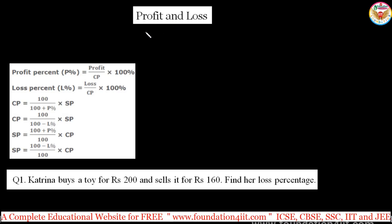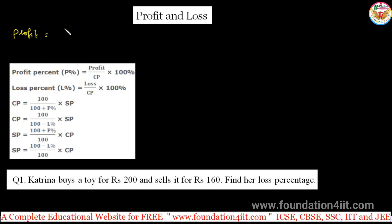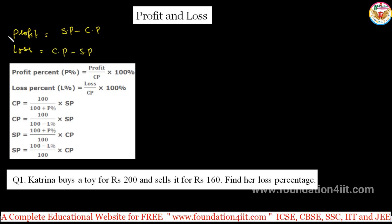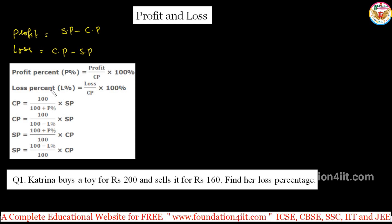Profit and loss — already at the school level we learn these formulas. The meaning of profit is that selling price should be more, so profit equals selling price minus cost price. Loss equals cost price minus selling price. These are the basic formulas. Profit percentage is profit by cost price into 100, and loss percentage is loss by cost price into 100.